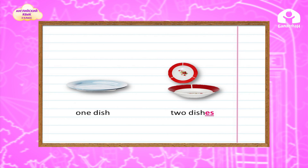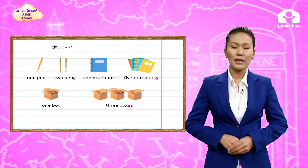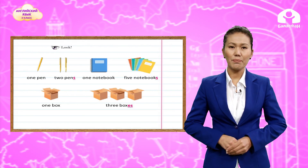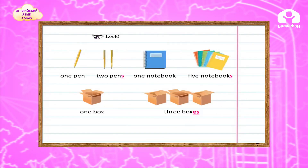Okay, well done. Now children, look at the picture and repeat after me. What do you see? You see one pen and two pens. One pen is singular form. Two pens is plural form. What do you see? One notebook and five notebooks. One notebook is singular form, five notebooks is plural. One box, three boxes — four boxes are plural forms of nouns.